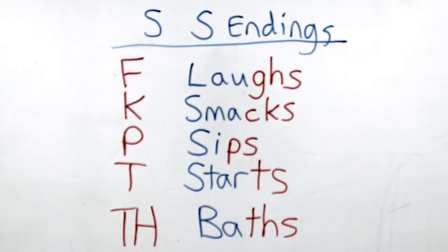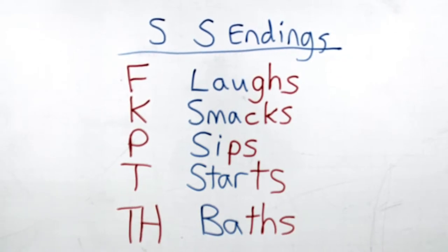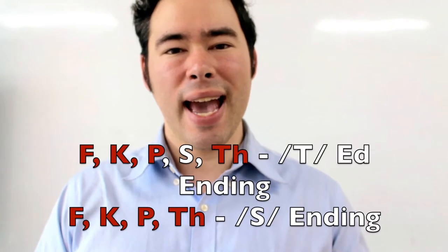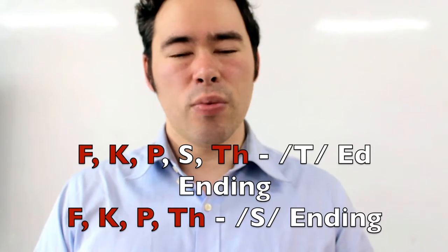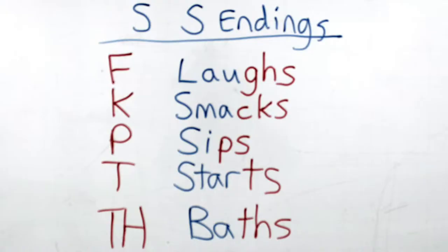First, the S-sounding S endings. Words that end with these sounds — F, K, P, T, and the unvoiced TH sound — use the S pronunciation. Remember our E-D ending video where F, K, and P had the simple T-sounding ending like 'laughed,' 'liked'? Same idea with the simple S-sounding ending — we've just added the unvoiced TH. Examples on the board: laughs, smacks, sips, starts, baths.